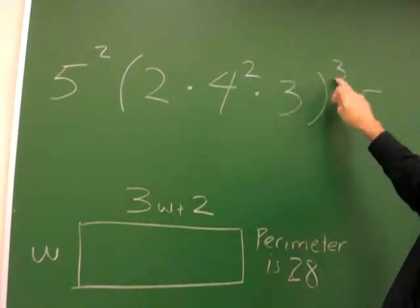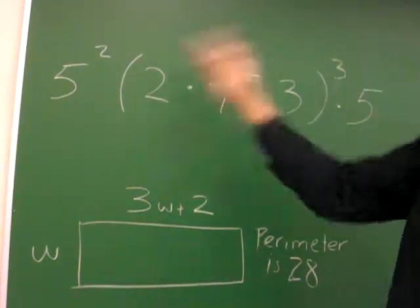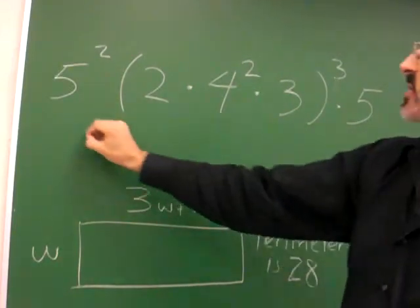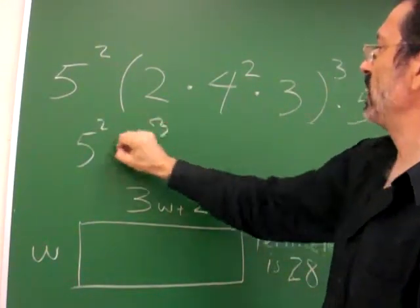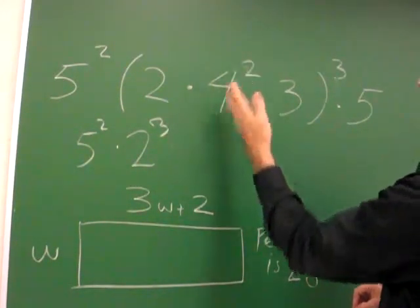Before I get started, I need to put this 3 exponent throughout all. So I can say it's 5 squared, 2 to the 3rd power,